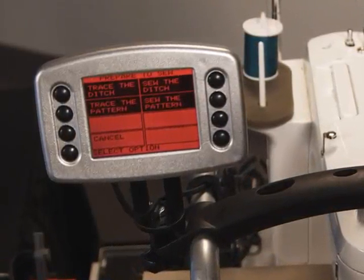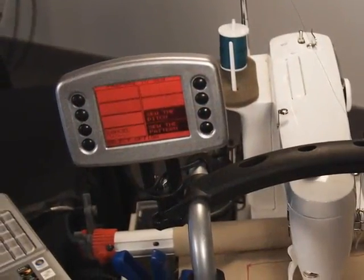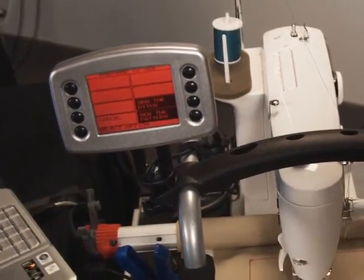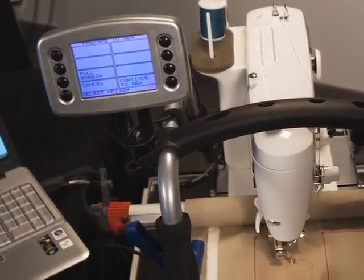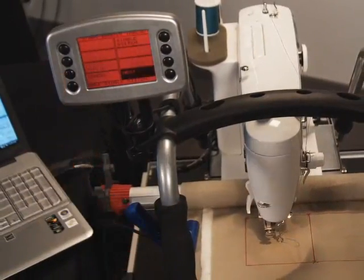We will demonstrate the sewing the ditch feature later. Now we will select the sew pattern button. You are given the option to pull your bobbin or continue to sew the pattern. If you desire to bring your bobbin thread to the top select the pull bobbin button.